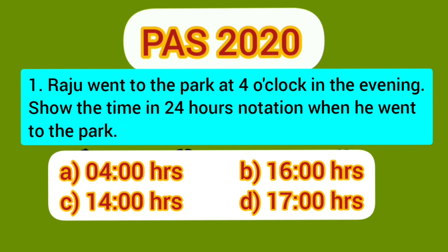Now it is time for the pass question. Here is the pass question for today: Raju went to the park at 4 o'clock in the evening. Show the time in 24 hour notation when he went to the park. The options are: A) 4 hours, B) 16 hours, C) 14 hours, D) 17 hours. We know 4 o'clock in the evening is shown in 24 hour notation as 16. So option B, 16 hours, is the correct option and we will put a tick mark at option B.